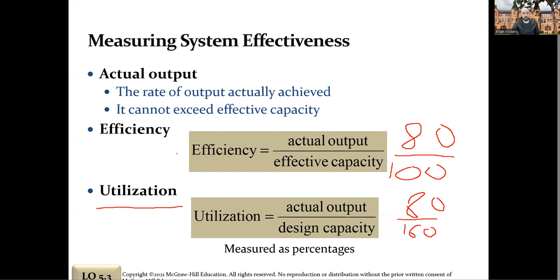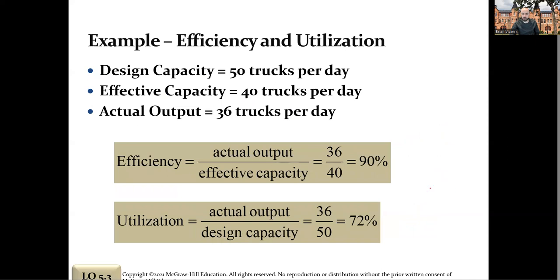Doing this in Excel is as simple as having actual output in one cell, effective capacity or design capacity in another, and writing a formula dividing one by the other. The only tricky thing is remembering which matches up with efficiency and which with utilization — which is effective, which is design. The easiest way to remember: efficiency and effective both start with EFF. That's your mnemonic device.